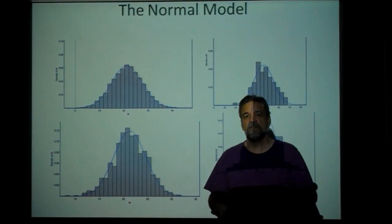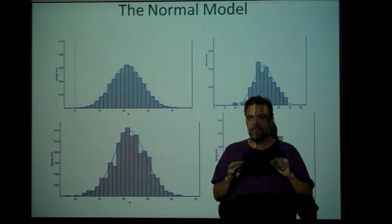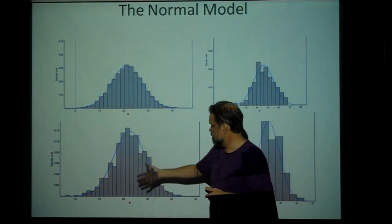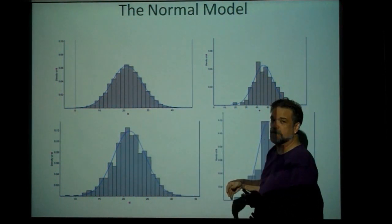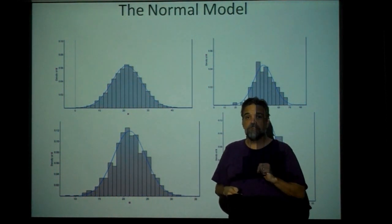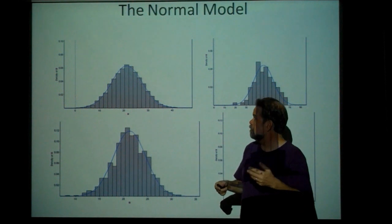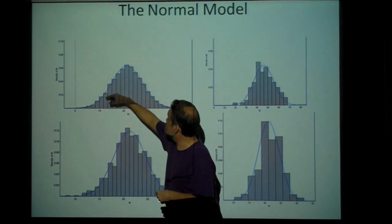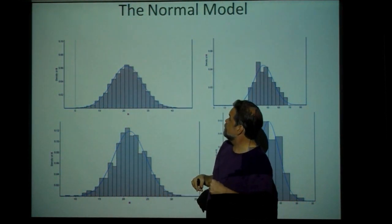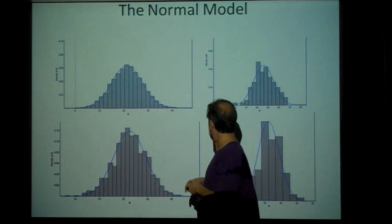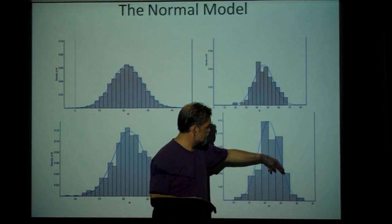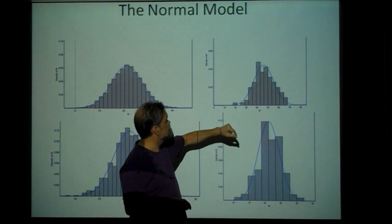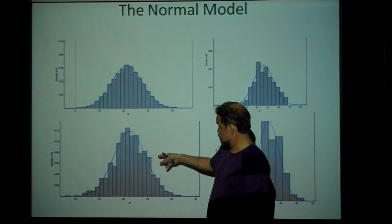The normal model is a model — it's theoretical, it's not real. The histograms we see here are histograms of actual data, and they're all very close to the normal model, which is this bell-shaped curve we're all very familiar with. This dataset right here is extremely closely aligned to the normal model. Basically, any dataset that is unimodal and fairly symmetric can be matched closely to a normal model. And as George Box said, all models are wrong, but some are useful.